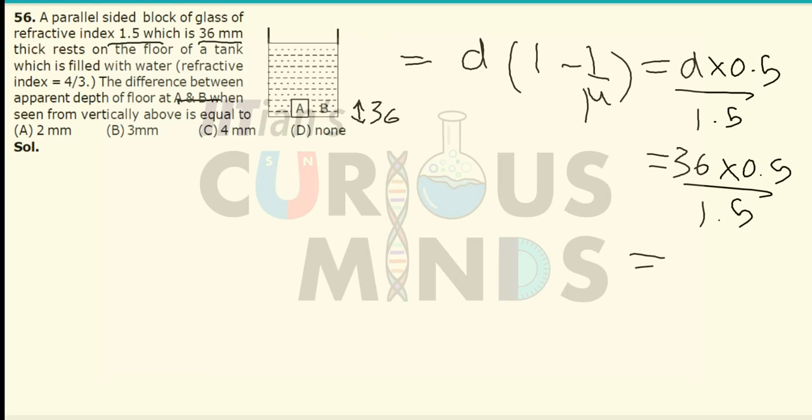The shift in the height will be equal to 18 divided by 1.5, which is equal to 12 mm. Since the apparent depth is given in millimeter, this will also be in millimeter when seen from glass.